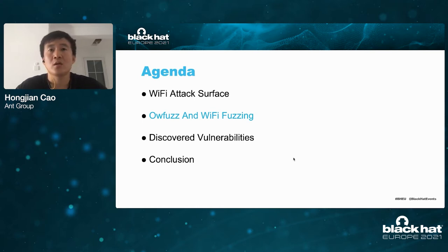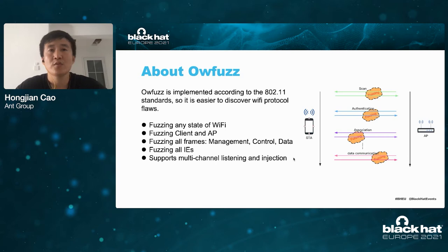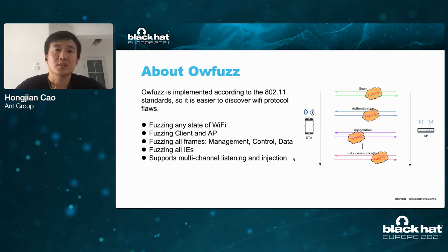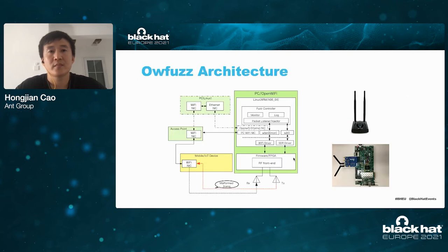Next I will talk about how Ofos does the Wi-Fi fuzzing, and how Qualcomm is parsing frames and detecting malformation from the frames. Our fuzzer is implemented according to the 802.11 standard, so it is easier to discover Wi-Fi protocol flaws. It can fuzz client and AP devices in any state, generate all types of frames including any elements, and can simulate the process of interaction. Our fuzzer can also monitor and inject packets into multiple channels, such as during fuzzing P2P interaction.